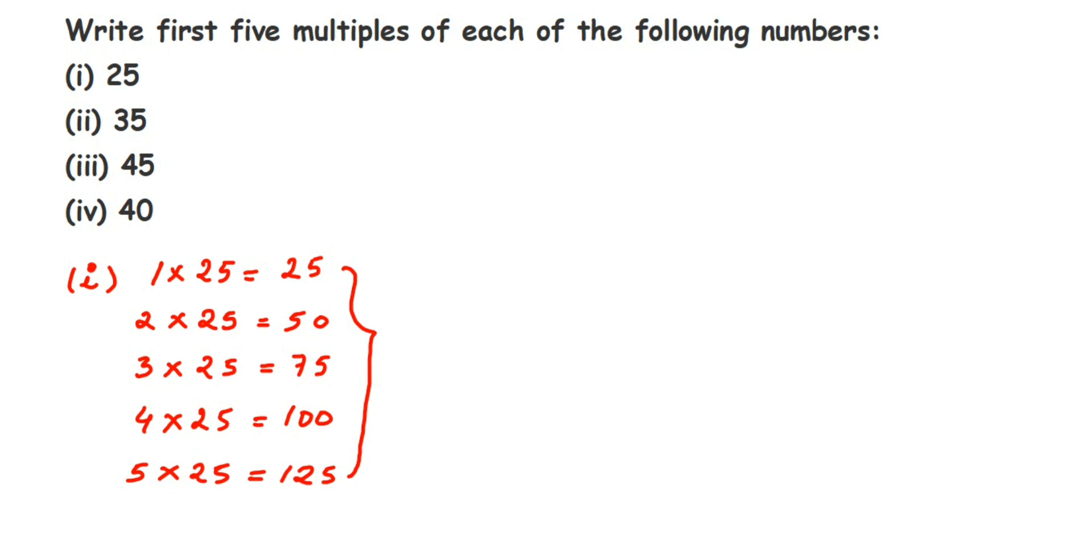Similarly, let me start with the second question. Now here we have 35, so let me write down here: 1 into 35 is equal to 35. Then 2 into 35 is equal to 70. Then 3 into 35 - if you multiply, 3 into 35 is equal to 105.